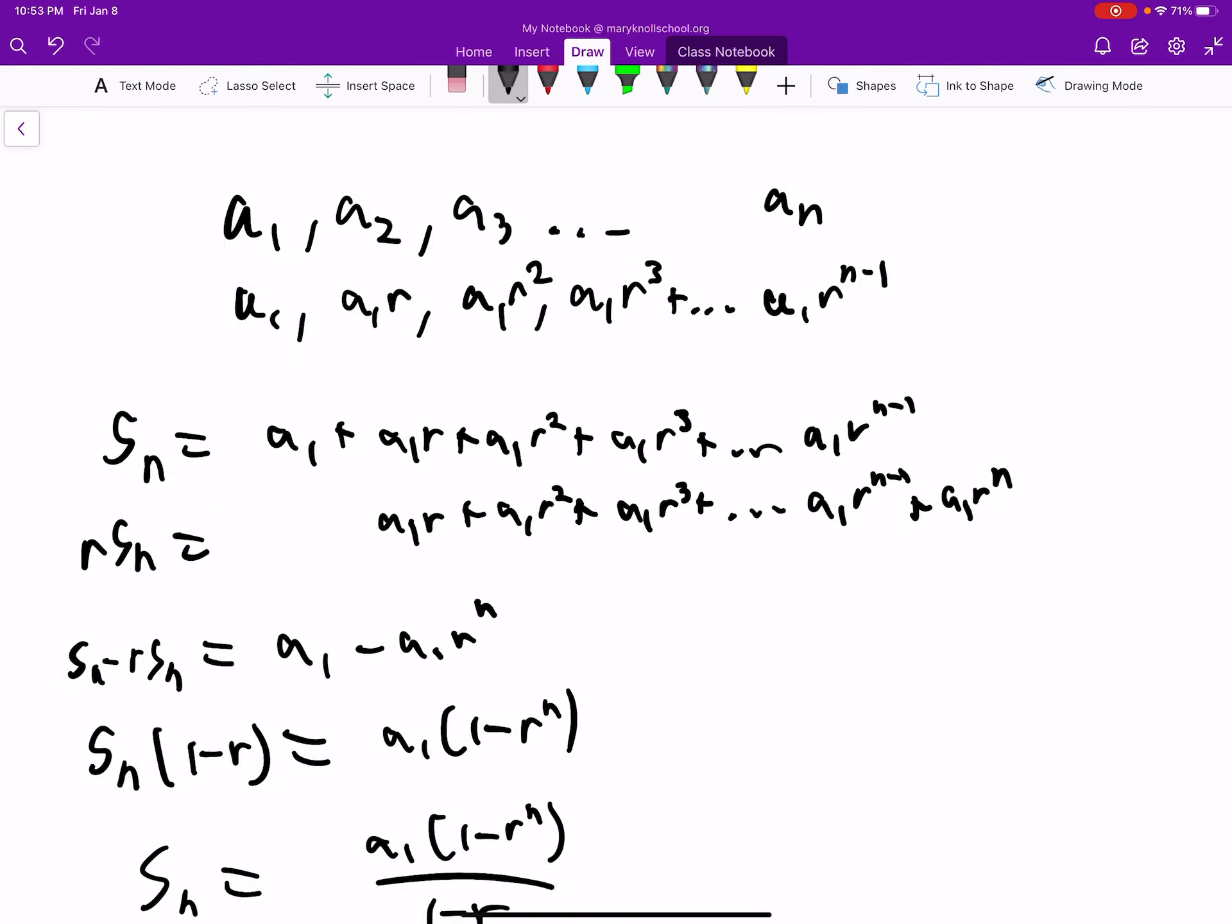First thing you do is a1 through an is the sequence. Remember, r is the ratio and a1 is the starting point.